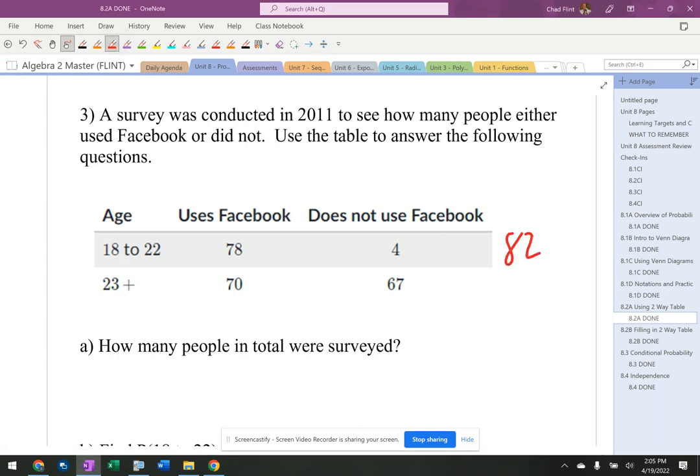There's 82 there. There's 137 there, which means there's 219 here. 148 and 71. Oh, sorry about that. So I need totals before I can actually answer any of these questions.